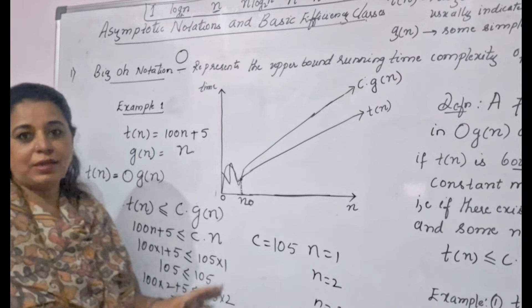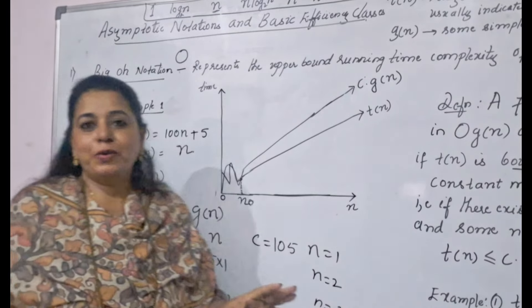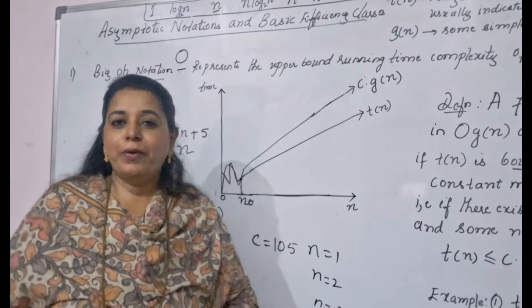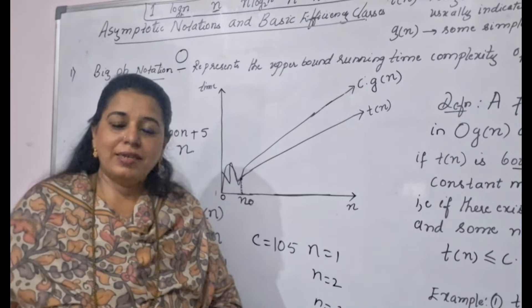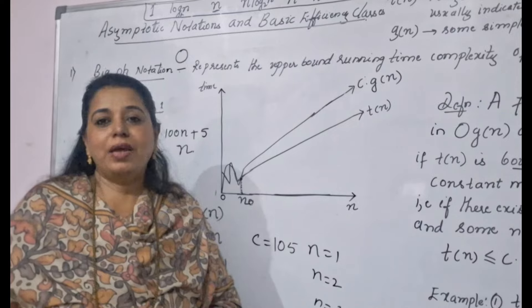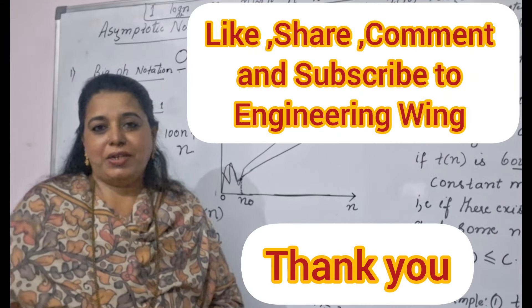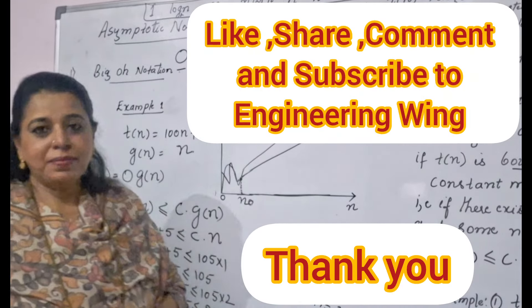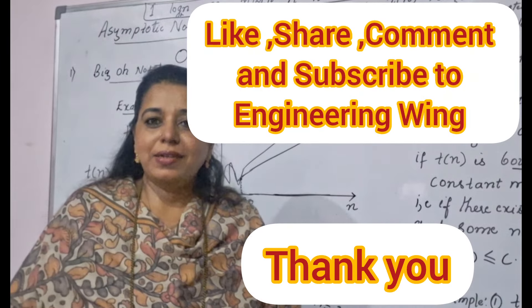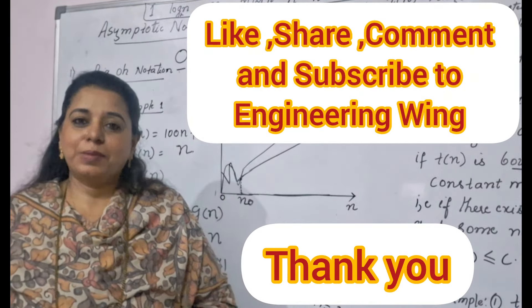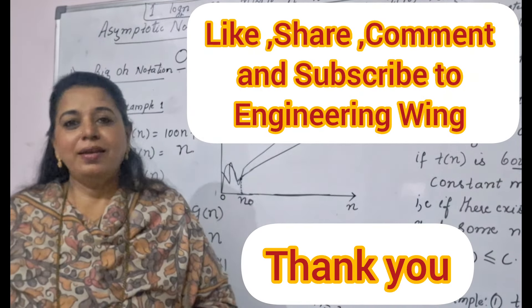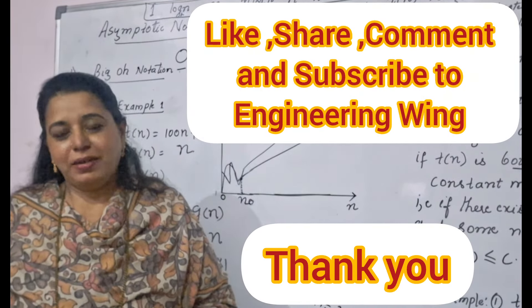To understand Big O notation, first write the definition and then draw the sketch showing where t(n) is and where c·g(n) is. Given any example to find the upper bound, follow these steps. Hope this session is clear for the Big O notation. In the next session I shall explain the Omega notation. If you find this session useful, please like, share, and subscribe to my channel. Thank you, bye bye and take care.